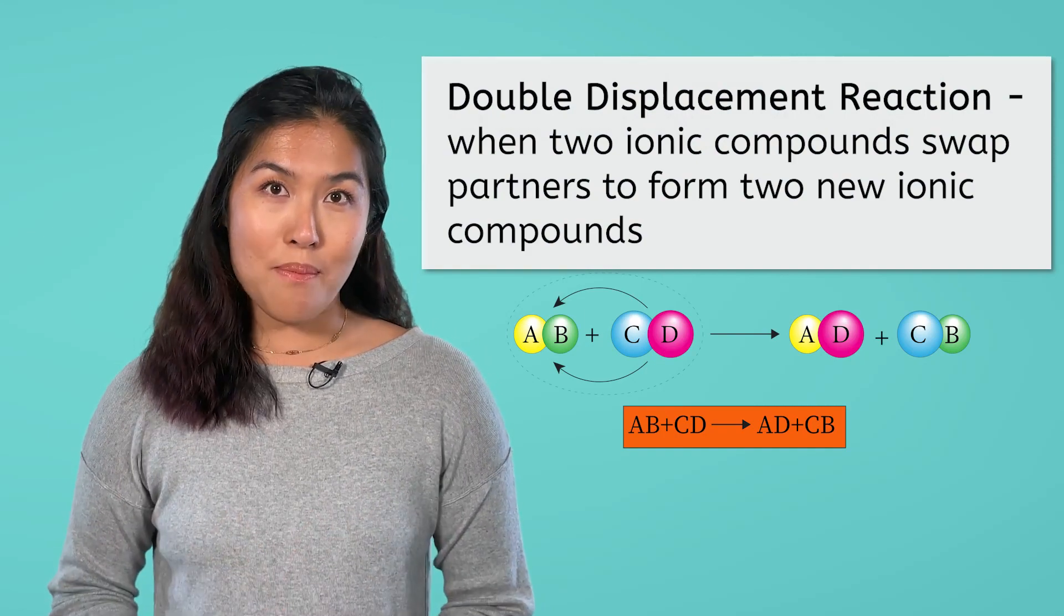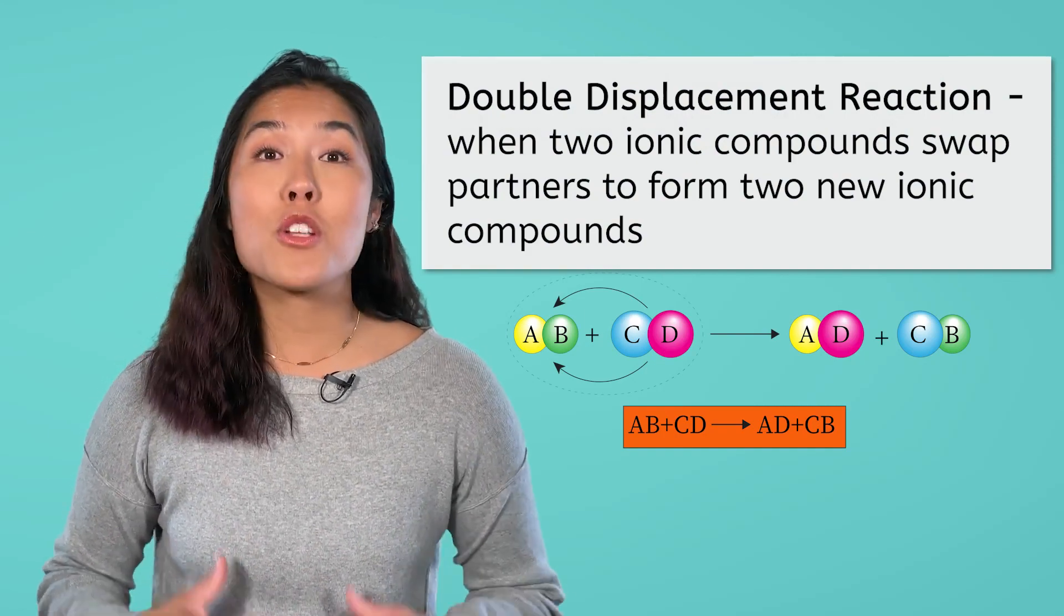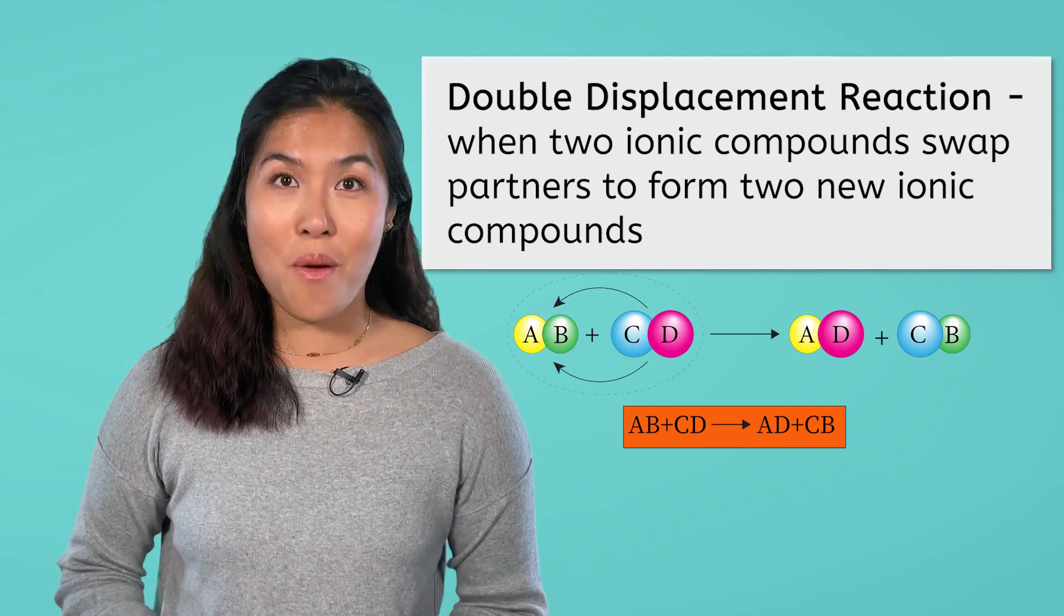In a double displacement reaction, you usually have two ionic compounds reacting to form two new ionic compounds. The only way for this to happen is if the metals and nonmetals switch partners.